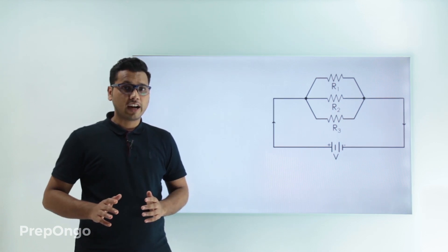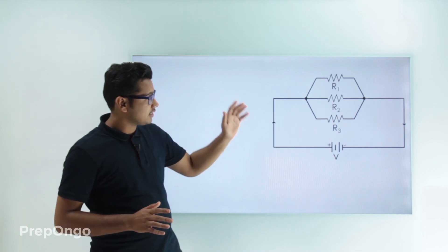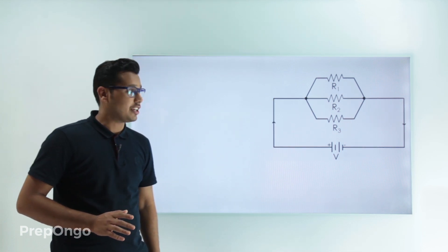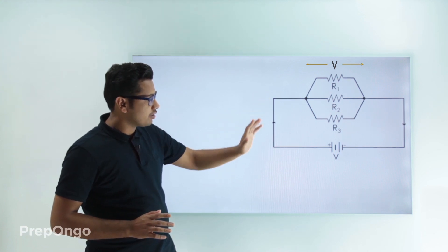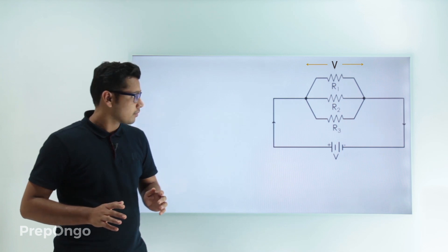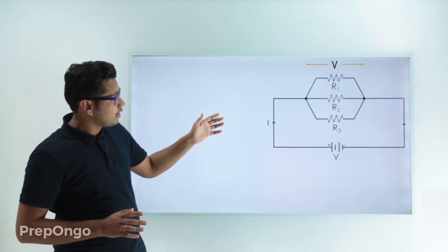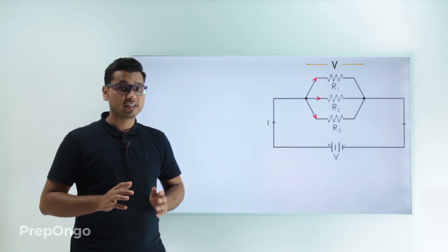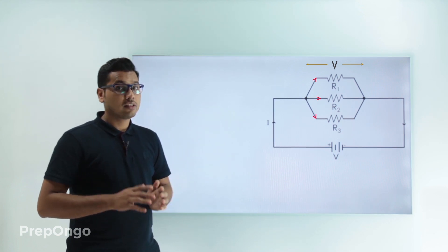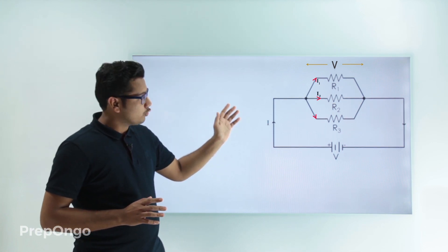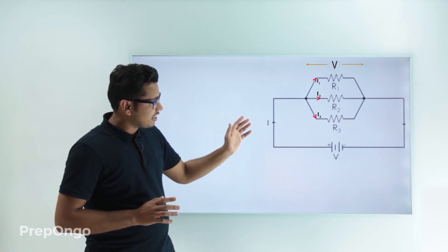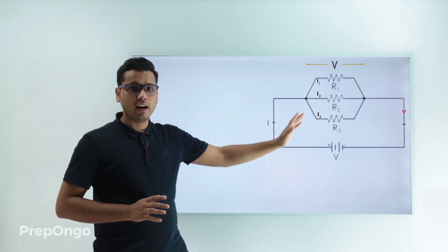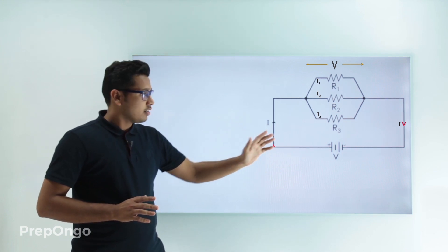We know that the voltage across the resistors is the same. Let's say the voltage across R1, R2, and R3 is V, which equals the battery voltage. Now if we look at the current, current I will start and when it reaches the junction, it will divide — the electrons divide in each resistor. So I1 will go in R1, I2 in R2, and I3 in R3. When they reunite, we get current I again flowing through the circuit.